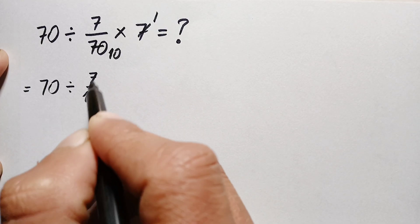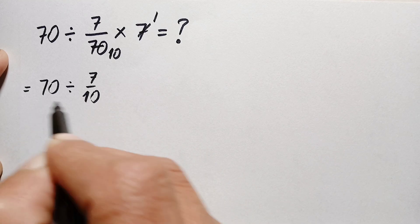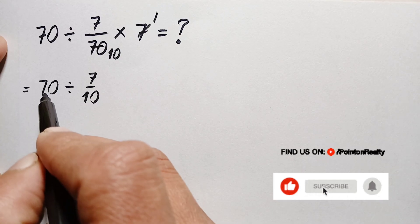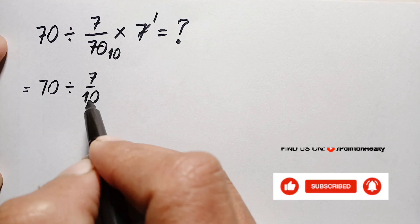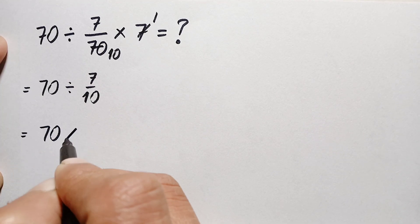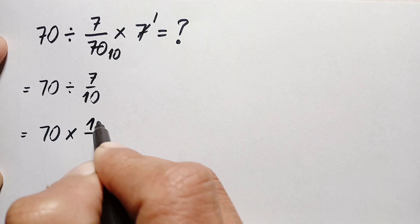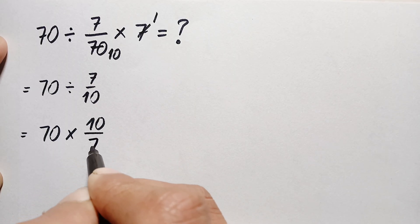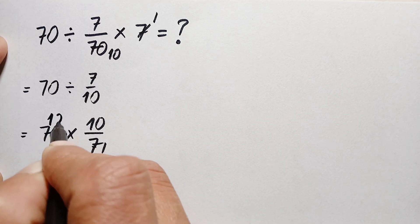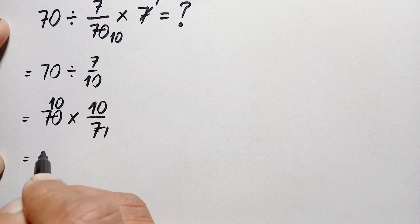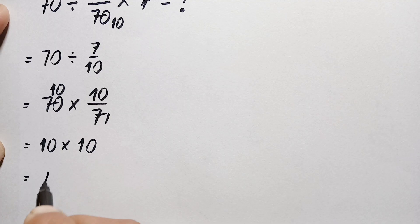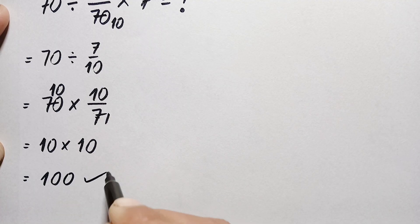Here we cannot directly divide 70 by this fraction. We will apply the capsules rule: we leave the first number the same, change division to multiplication, and reverse the fraction. So this becomes 70 times 10/7. We can simplify: 7 times 1 is 7, 7 times 10 is 70, giving us 10 times 10, which is simply 100. This is our answer.